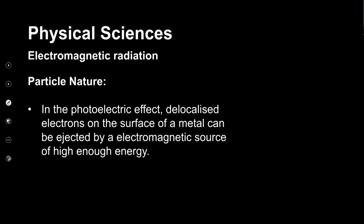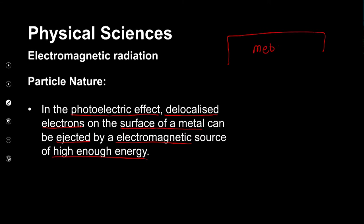The photoelectric effect is when delocalized electrons on the surface of a metal get ejected when an electromagnetic wave of high enough energy hits the metal. In the photoelectric effect, when an electromagnetic wave of high enough energy strikes the metal, these surface electrons can be kicked off. This is strong evidence for how electromagnetic radiation behaves like a particle.